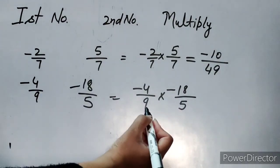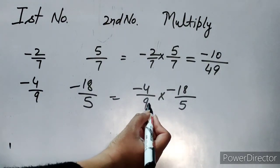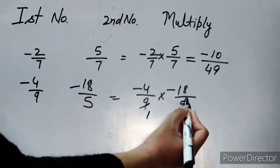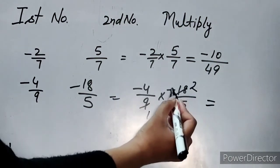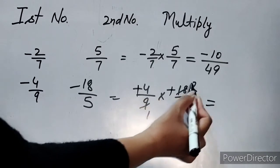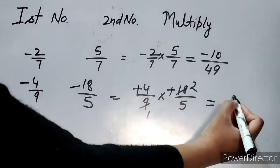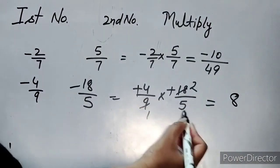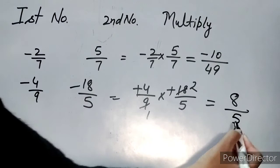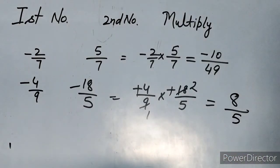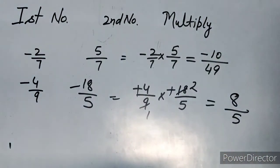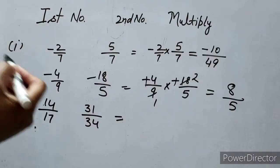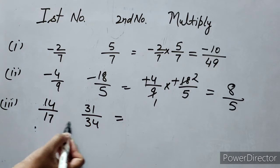Since 18 is a multiple of 9, we simplify: 9 goes into 18 twice. Minus times minus gives plus. 4 multiplied by 2 gives 8, and 1 multiplied by 5 gives 5. So the answer is 8 over 5.